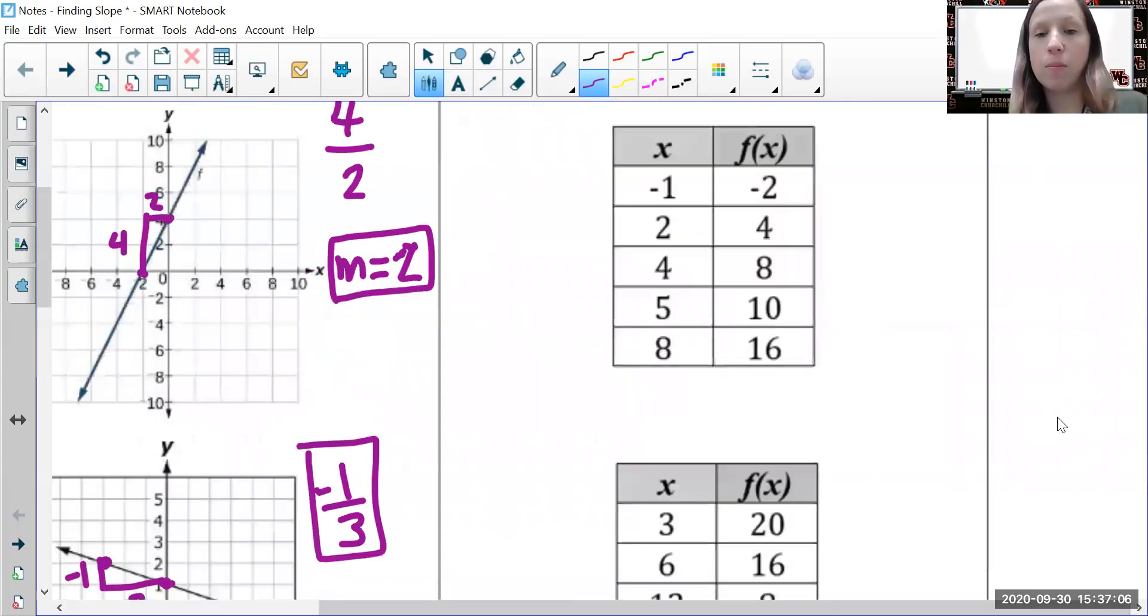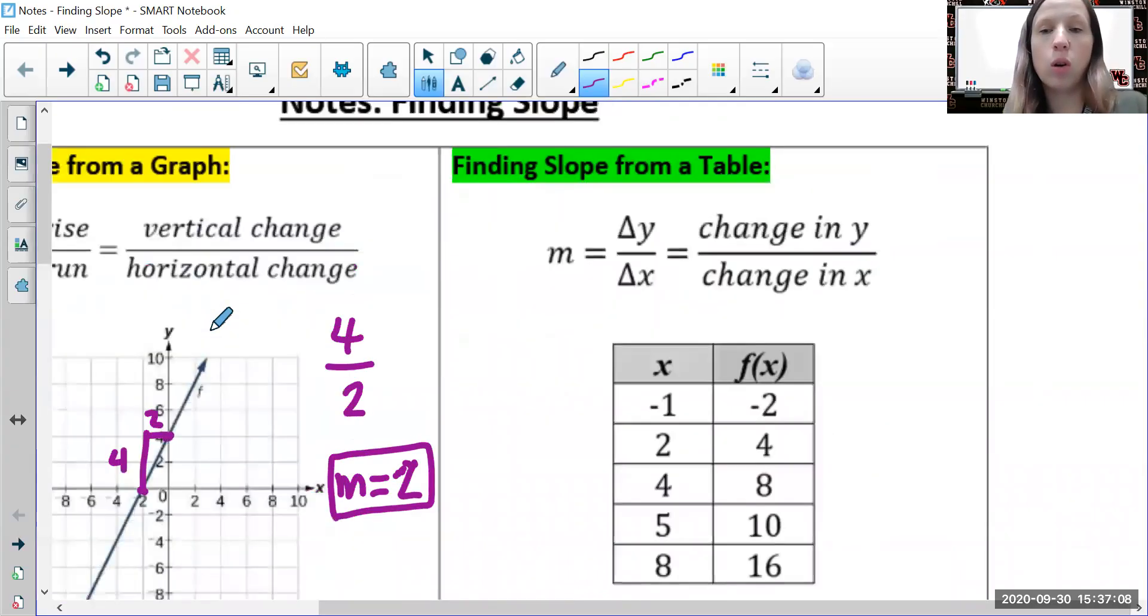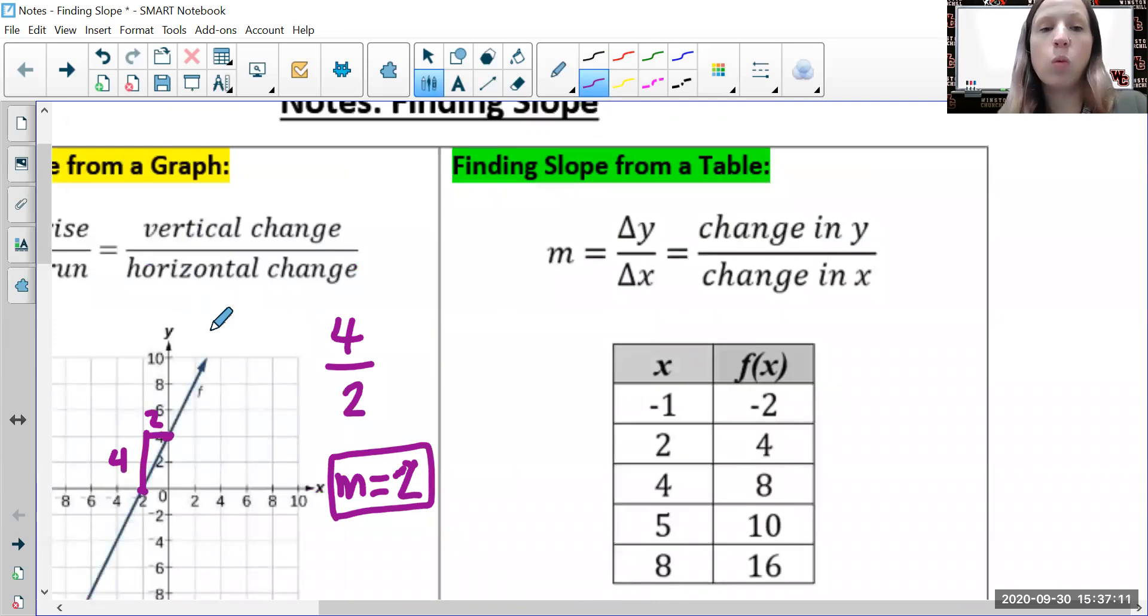With a table, we use change in y divided by change in x. f(x) and y are the same thing. Pick any two points and find the change in their y's. From four to eight, that's an increase of four. The x's are increasing by two, from two to four.